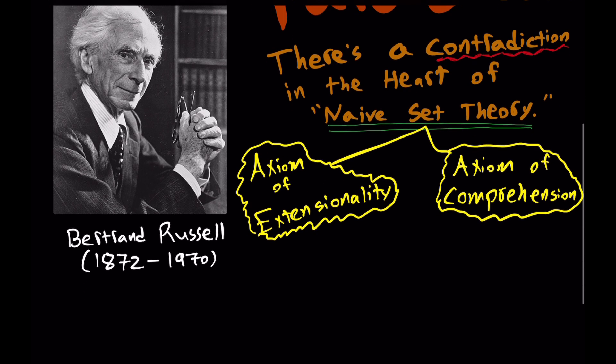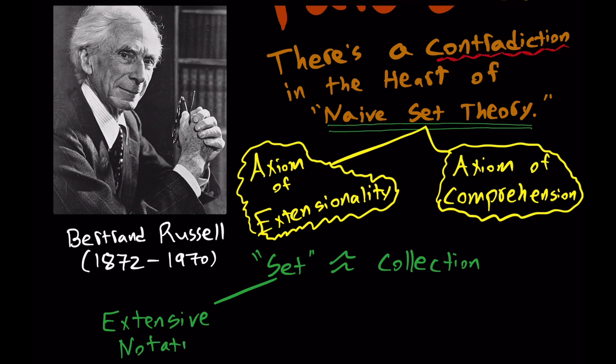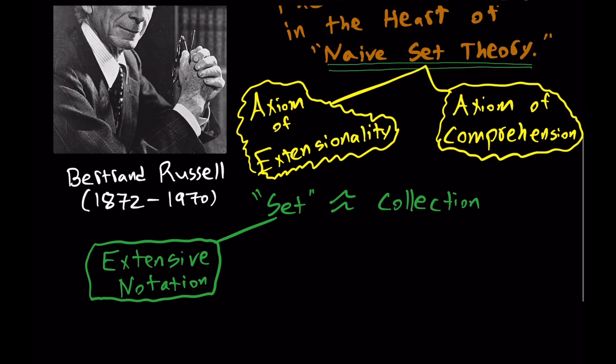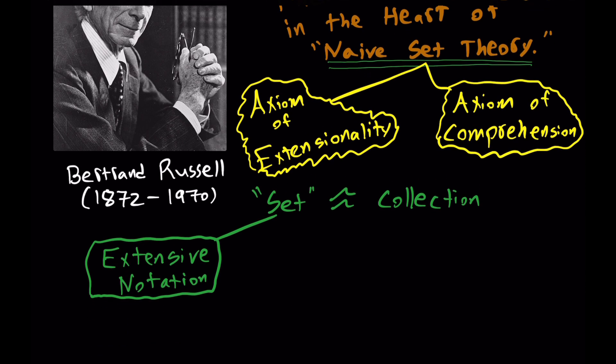As I said, loosely speaking, a set is a collection. It's a collection of objects, although it might be empty. Generally, we can think about the notation this way. On the one hand, we have extensive notation. When we're using extensive notation to refer to a set, we explicitly name the members of that set.